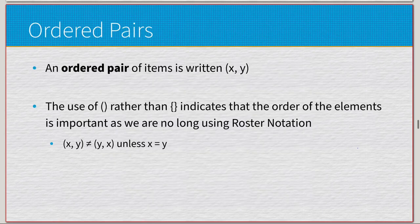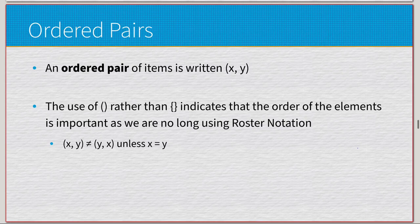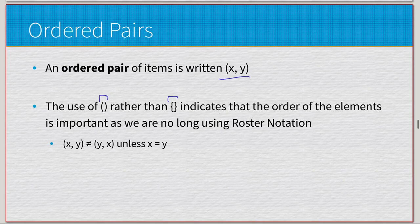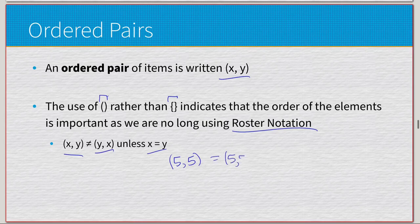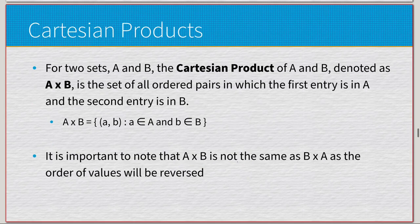Now we'll look at types of sets outside of roster notation. We have ordered pairs, which most people have seen. A pair of items is written as (x, y) — parentheses instead of curly braces — indicating that the order of elements matters. This means (x, y) is not equal to (y, x) unless x equals y. If you had (5, 5), swapping the order still gives (5, 5), but in general order matters.